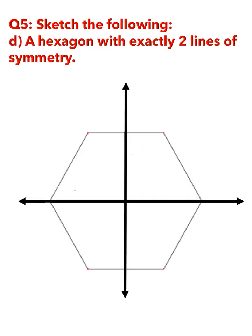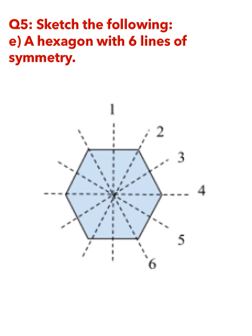Part D is a hexagon with exactly two lines of symmetry. The hexagon will be drawn in this shape. Note carefully, because in the next part you again have to draw a hexagon but it should have exactly six lines of symmetry. The six lines of symmetry are drawn here with numbers so you can see what the six lines are. This was about the fifth question of the exercise.